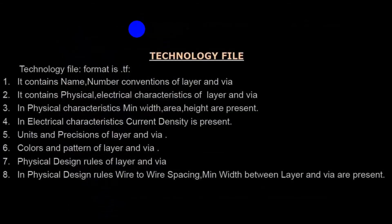The next input is the technology file. The format is .tf. It contains name and number conventions of layers and vias, as well as physical and electrical characteristics of layers and vias. In physical characteristics, minimum width, area, and height are present. In electrical characteristics, current density is present. Units, precision, colors, and patterns of layers and vias are also included.